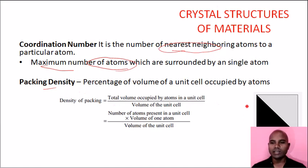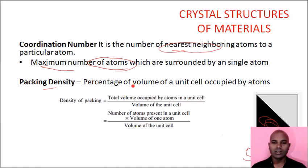If we take a square example, in this example there is 50% filled in black. So packing density is 50%. If we solve the formula: total volume occupied by atoms divided by volume of unit cell. If we solve the total volume occupied by atoms and the total volume of the unit cell, we can find the packing density.